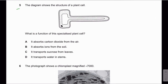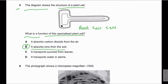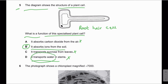MCQ number five: The diagram shows the structure of a plant cell — this is a root hair cell. What is the function of this specialised plant cell? The function of the root hair cell is the absorption of water and mineral ions from the soil. It does not absorb carbon dioxide from the air, and it does not transport sucrose — that is the function of phloem tissue. Students often mark D because they see 'water', but read carefully: it says 'transports water in stems', which is the function of xylem vessels, not root hair cells. The answer is B.